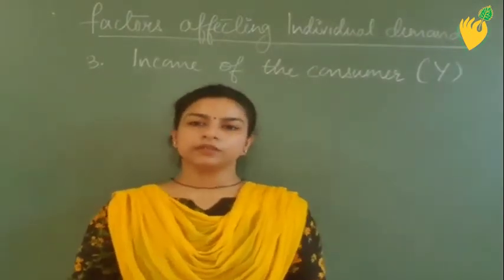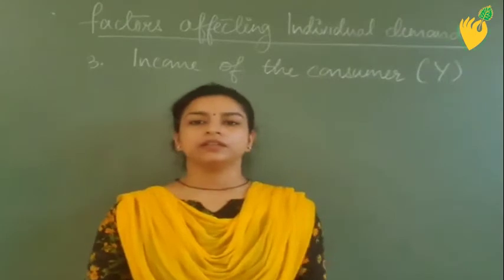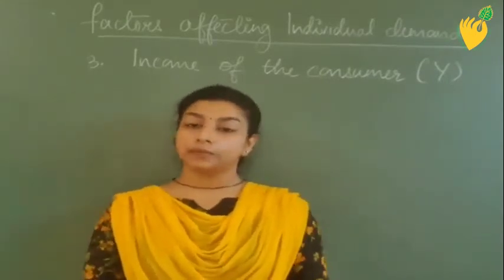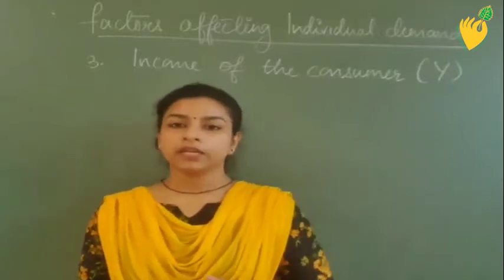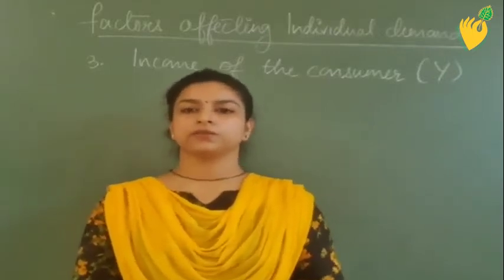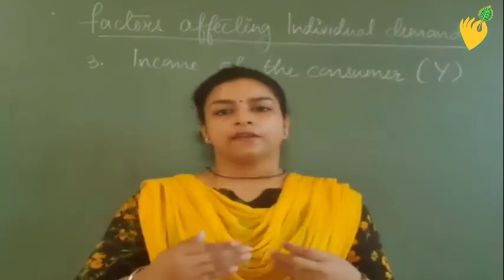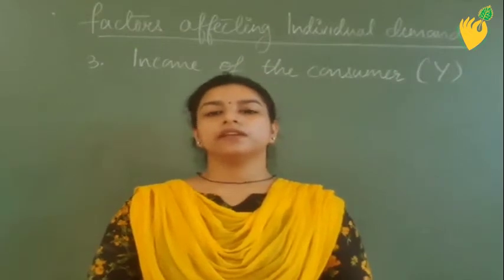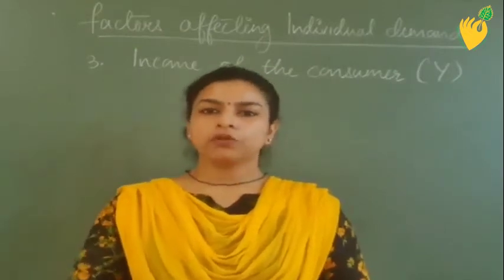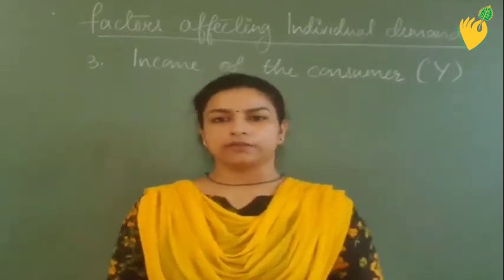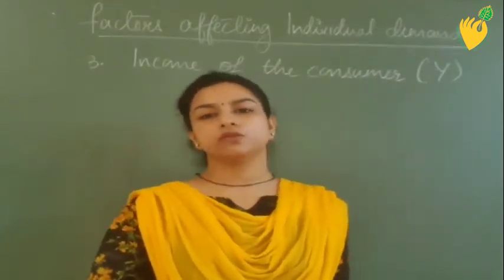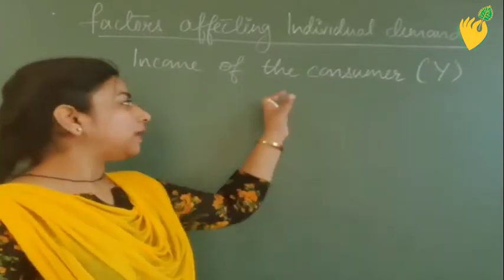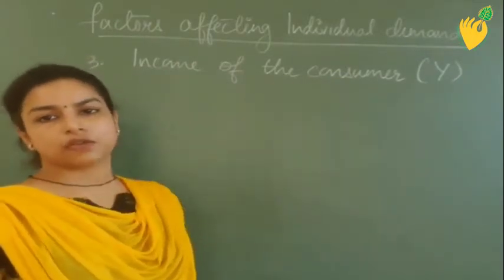When we differentiate between the two goods, the commodity can be normal for one person and inferior for another. Whenever we are considering a particular individual, we consider his preference. Whenever there is an increase in income of the consumer, he always tries to get more of the higher quality good — that is, the normal good — more than what he used to consume.